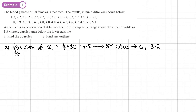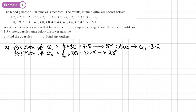We do the same for Q3, the upper quartile. The position of Q3 is three-quarters of 30, which is 22.5. Rounding up, it's the 23rd value. It may be easier to count down from the 30th value: 30, 29, 28, 27, 26, 25, 24, 23. The 23rd value is 4.0, so Q3 is 4.0.